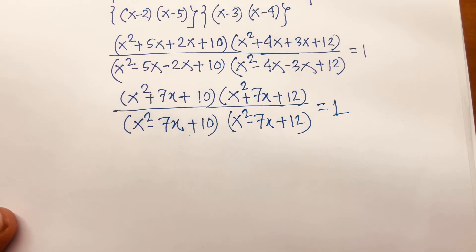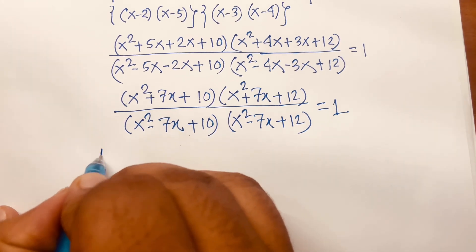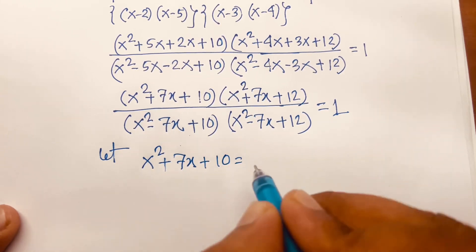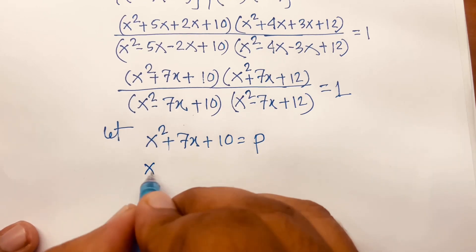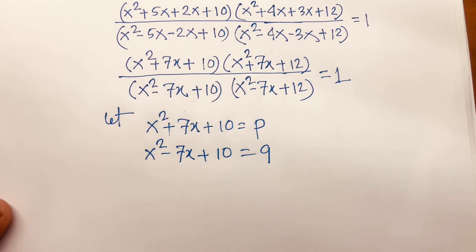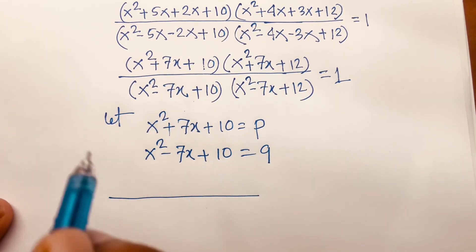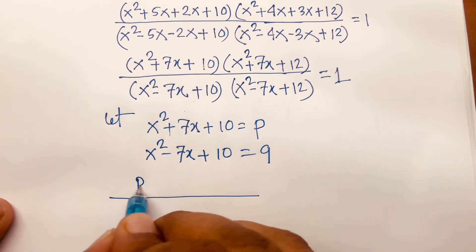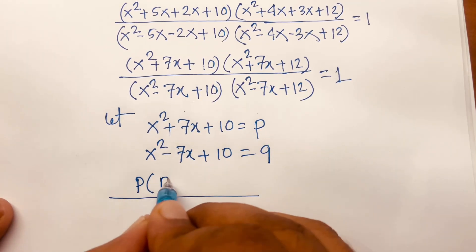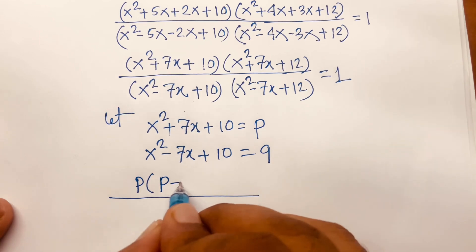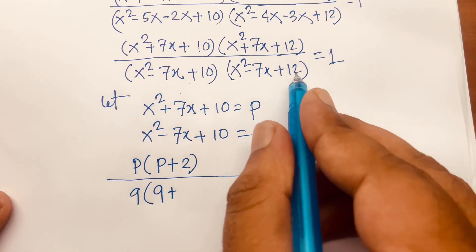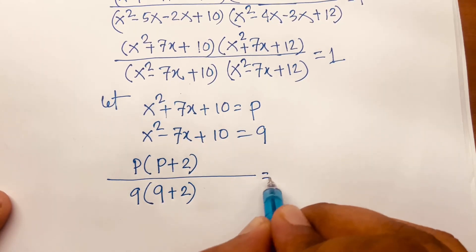Then, let x squared plus 7x plus 10 equal p, and x squared minus 7x plus 10 equal q. So the numerator becomes p times p plus 2, since 12 is 10 plus 2, and the denominator becomes q times q plus 2, equal to 1.